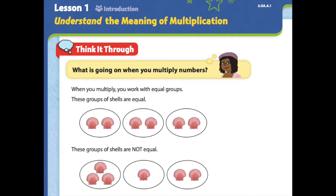So let's take a look. It says when you multiply, you work with equal groups. These groups of shells are equal. How many shells are in each group? Are there the same amount of shells in each group? Let's look at the next section. It says these groups of shells are not equal. How come? Can you tell me why they're not equal? What does equal mean and how come the second group is not equal?